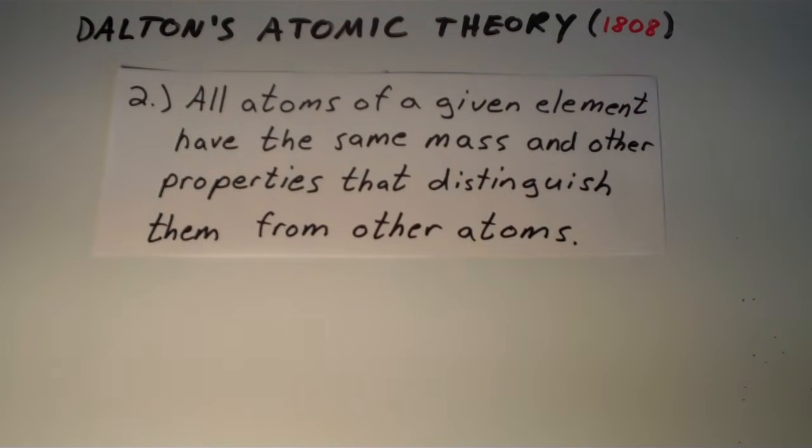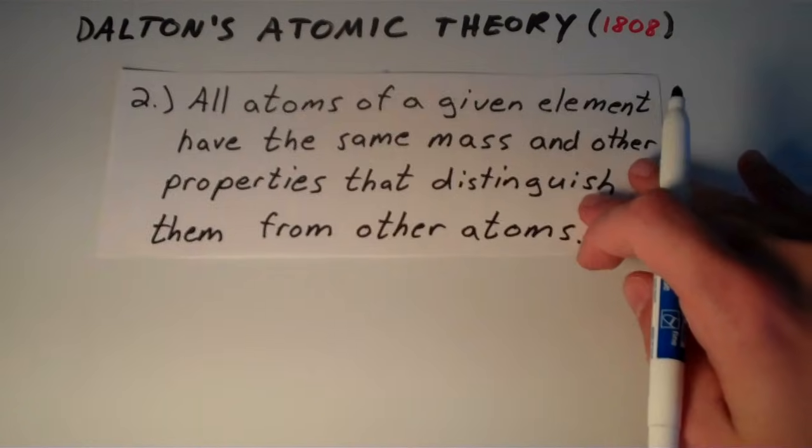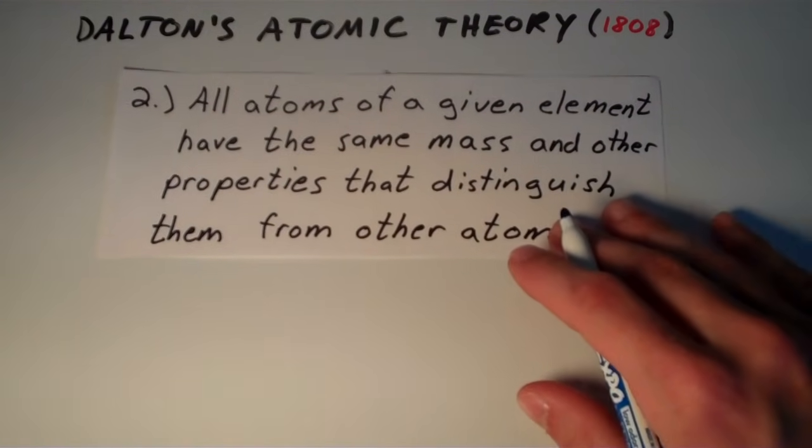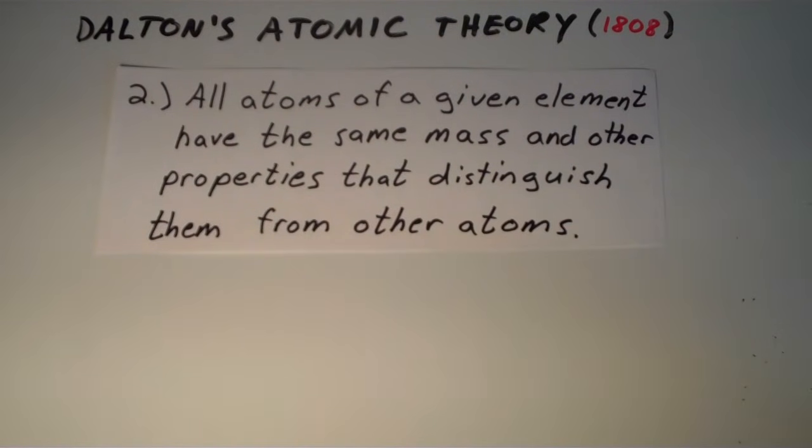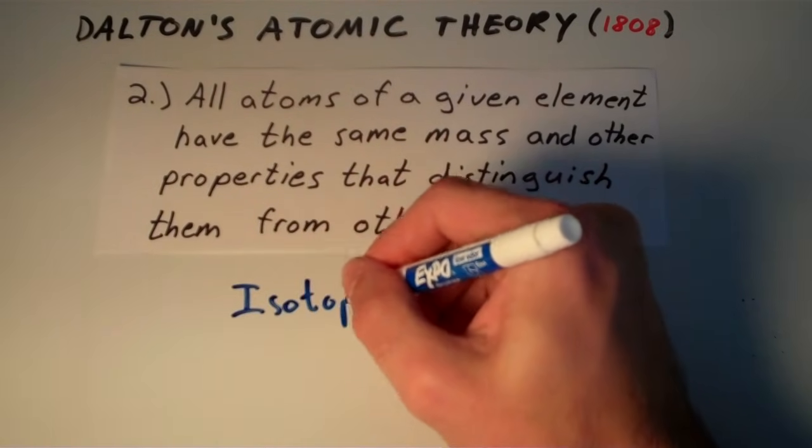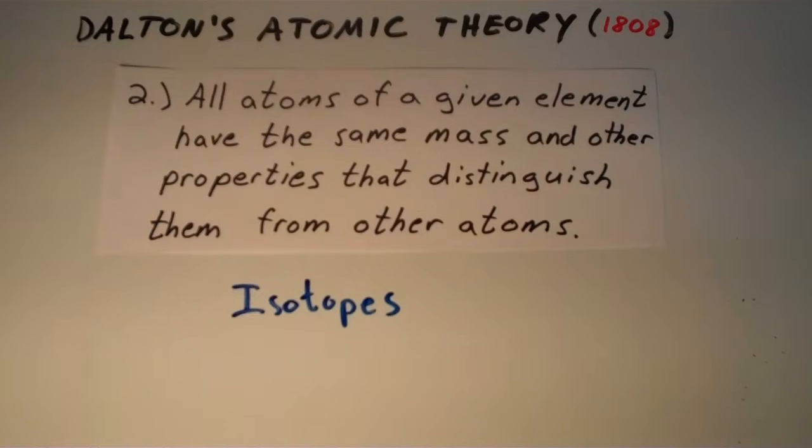So let's go over the second part. The second part says that all atoms of a given element have the same mass and other properties that distinguish them from other atoms. Now, while the second part of this sentence is true, that all atoms of a given element have properties that distinguish them from other atoms, it's not necessarily true that they all have the same mass. In fact, there do exist atoms of the same element that have different mass, and we call those isotopes.